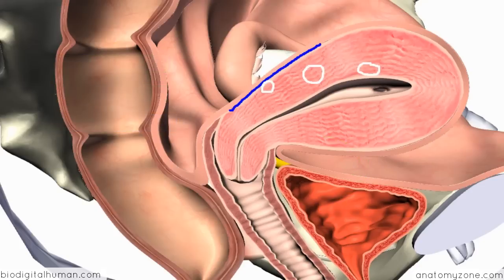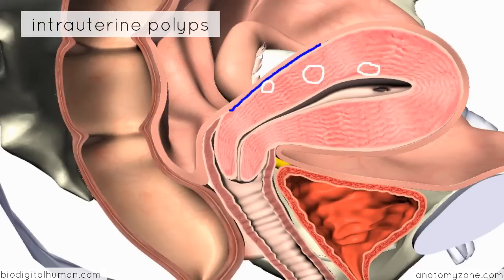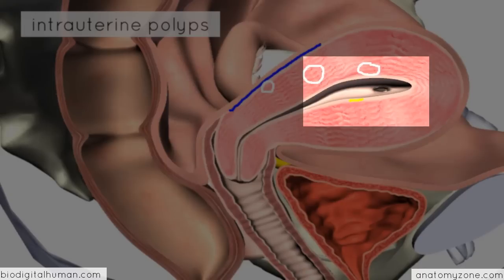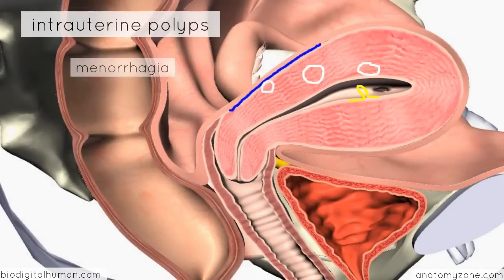Polyps are benign tumours which grow into the cavity of the uterus. Intrauterine polyps are generally endometrial in origin and grow out into the uterine cavity itself. Similarly, these cause menorrhagia and they can also be responsible for intermenstrual bleeding.